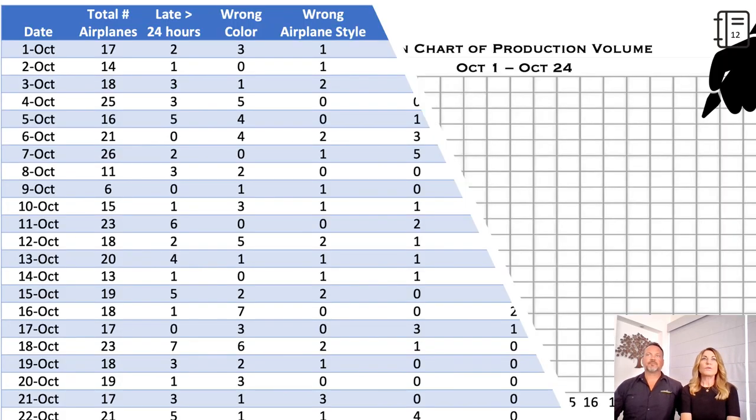In your workbook, you will see a table of data. This data is provided for you to create five different charts. The first practice is for you to use the data in the table to create a run chart of production volume. When you complete this chart, move on to the next chart and continue until you've completed all five charts. Pause the video now and we'll return to take a look at how you did when you come back.